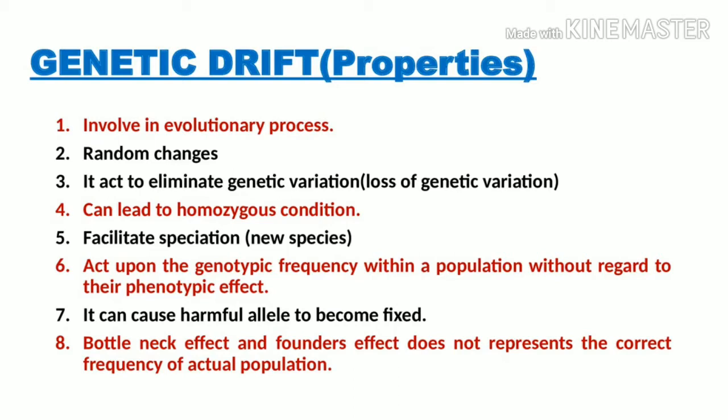The sixth property is that genetic drift acts upon genotype frequency within a population without regard to phenotypic effect. Genetic drift focuses on genotype or gene frequency and does not consider whether that genotype causes a drastic change in the environment. It does not pay attention to phenotypic effect — even if the phenotype in the surviving population is not suitable for survival in that habitat, genetic drift does not account for that; it only focuses on genotype frequency.